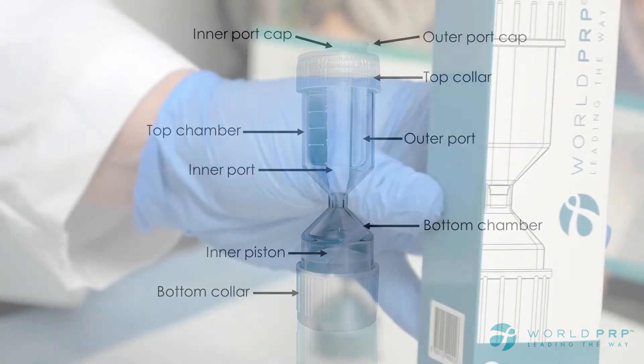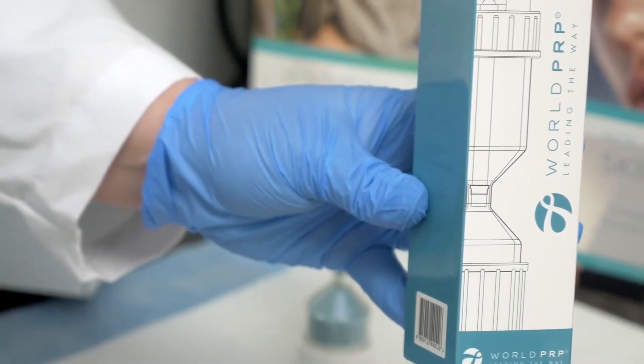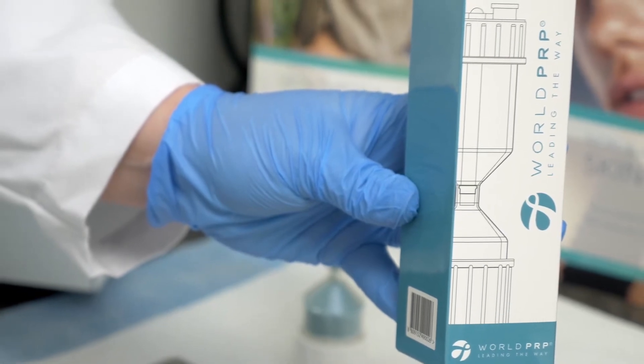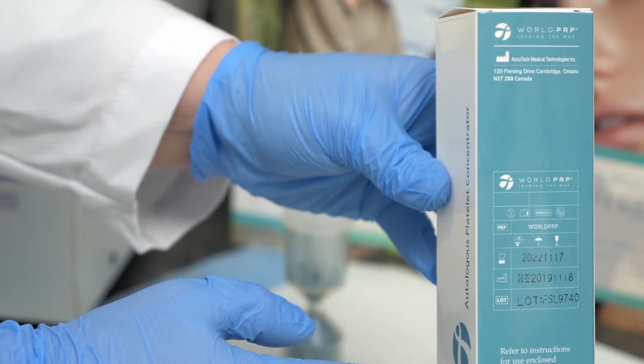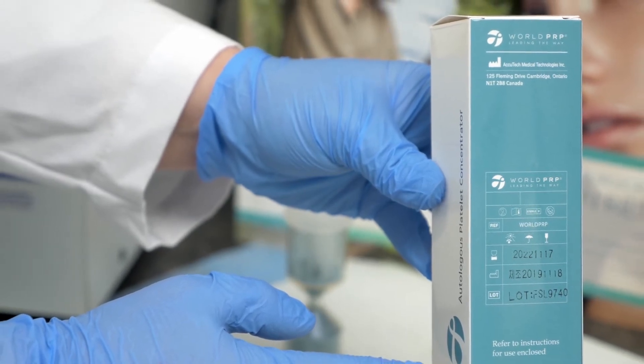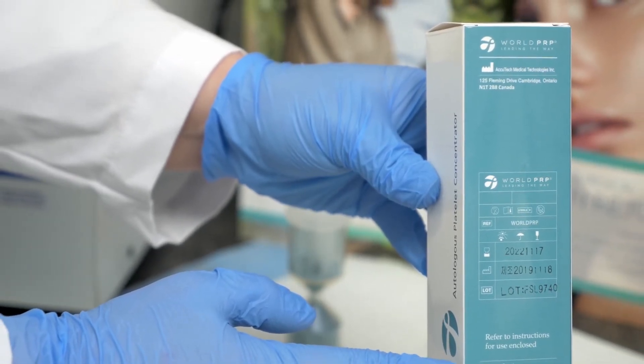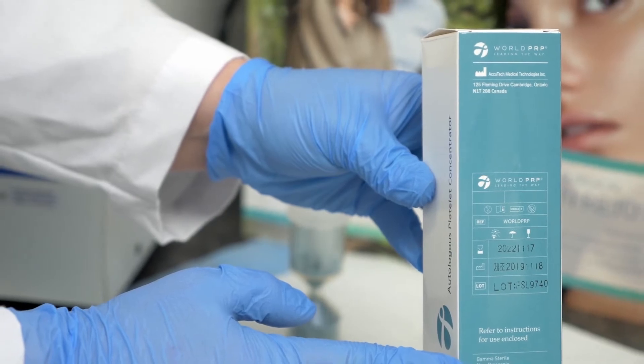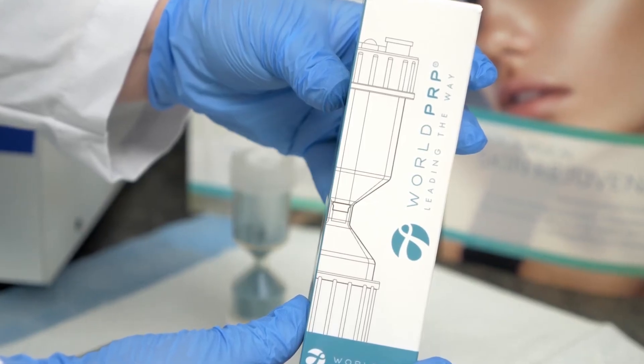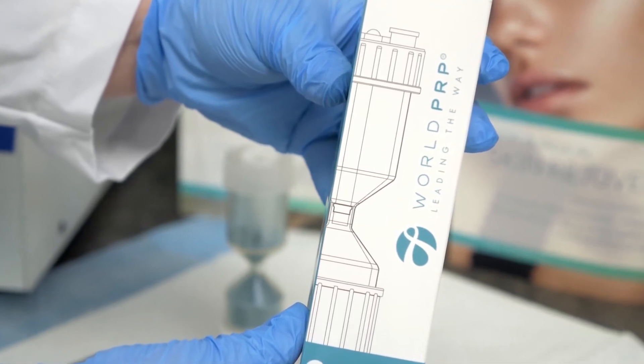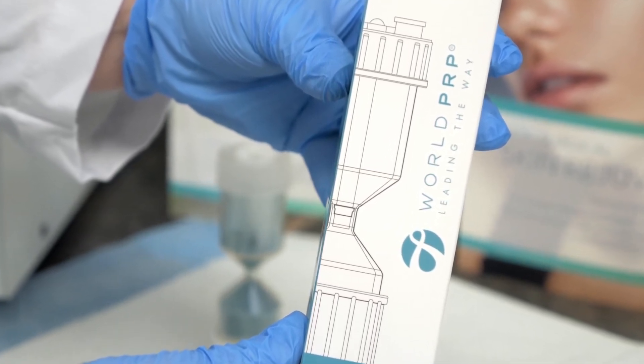The following are the steps to prepare your World PRP tube. The World PRP tube is a single-use sterile product. Prior to use check the expiry date of the product on the side of the kit packaging box. Check for any damage to the packaging and product. Do not use if the product date is expired. Do not use if the inner seal is broken as it is no longer sterile. Do not use if damaged.